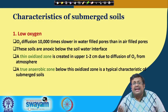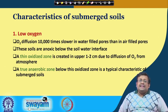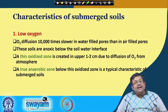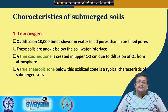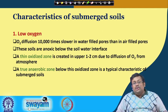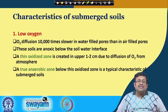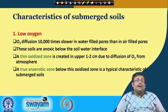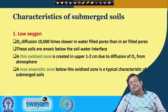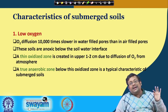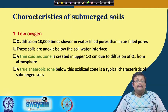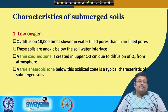The first important characteristic of submerged soils is low oxygen. Oxygen diffusion is 10,000 times lower in water-filled pores than in air-filled pores. These soils are anoxic below the soil-water interface due to low oxygen diffusion. A thin oxidized zone of 1–2 cm is created at the surface due to diffusion of oxygen from the atmosphere, and a true anaerobic zone exists below this oxidized zone.